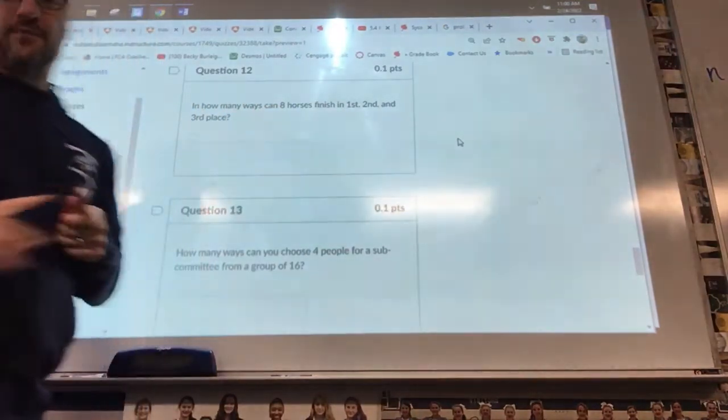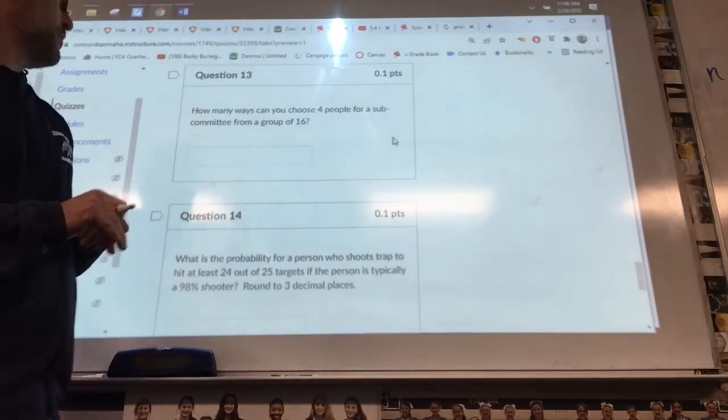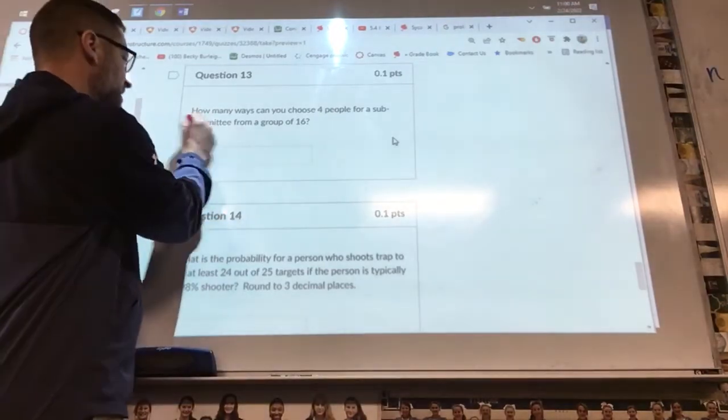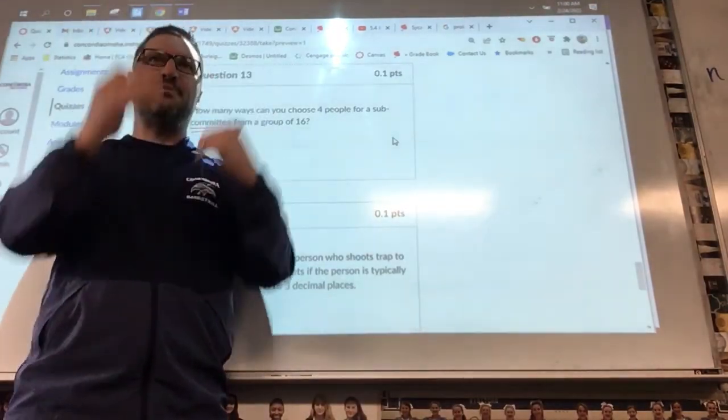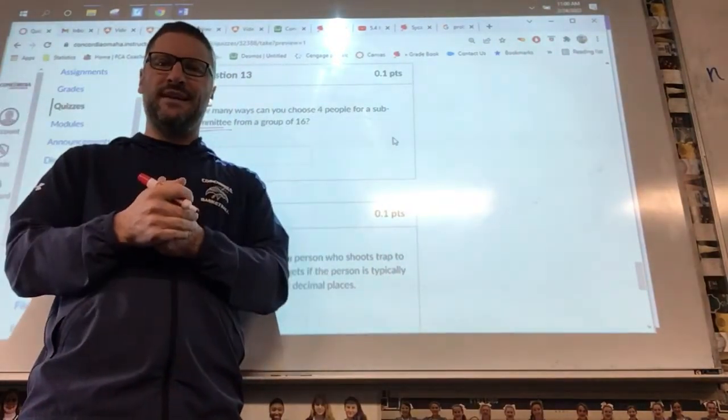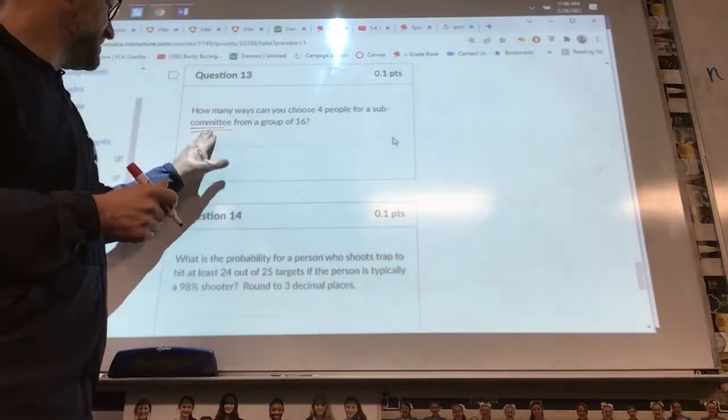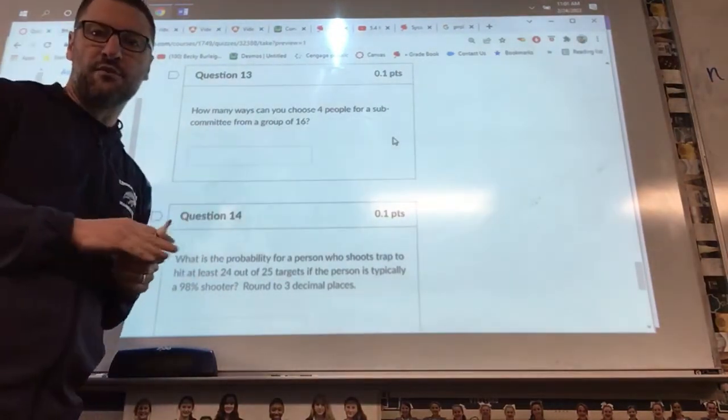Number thirteen: how many ways can you choose four people for a subcommittee? Committee implies that you're placing people on this group, and the order that you place them on that committee doesn't matter. Committee tells you right away whether to use a permutation or combination. You can go figure that one. That's an nCr or nPr one.